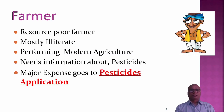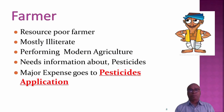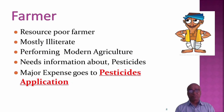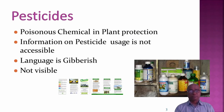I thought we should provide a clear-cut solution to the farmer. Suppose a farmer wants to buy a pesticide — the farmer is a resource, mostly illiterate, performing in modern agriculture, and needs information about pesticides. A large share of farm expenses goes to pesticide applications alone, and pesticides are poisonous chemicals used in plant production.